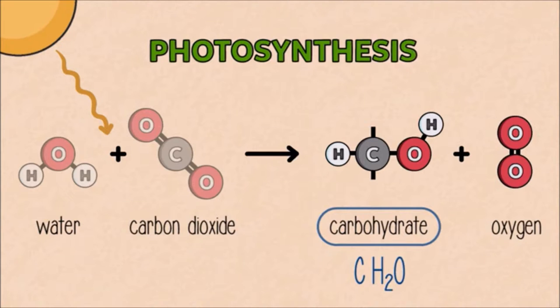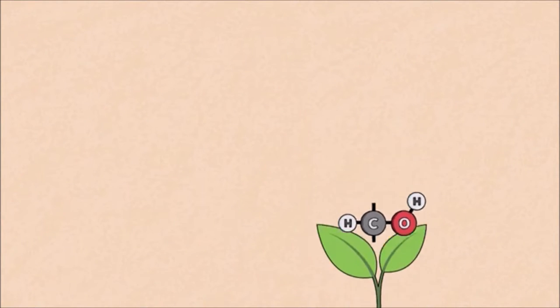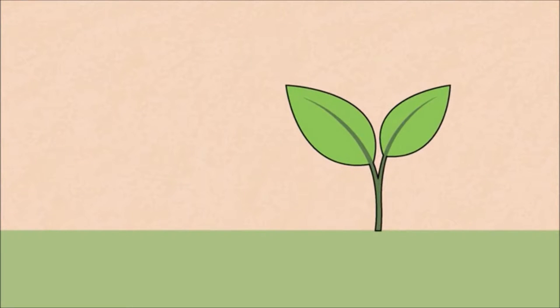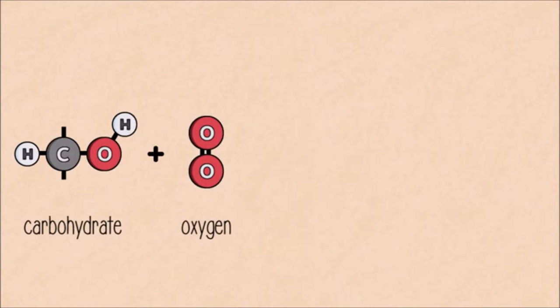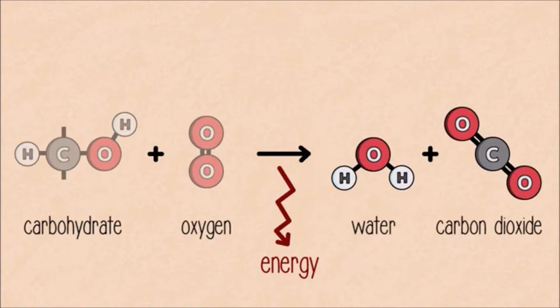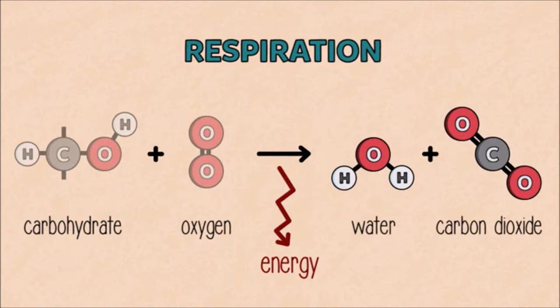That's photosynthesis. Energy is now stored, and living things can use the carbohydrates to build their bodies and structures. To obtain energy, they simply reverse this reaction, letting the oxygen and the carbohydrate rejoin, forming carbon dioxide and water all over again. And this is respiration.